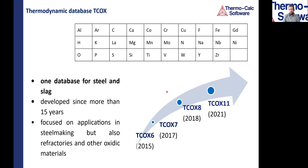The basis of everything is the database TCOX, which has been developed for over 15 years. The goal was to unify the description of steel and slag in one database, so you only need one database covering all the relevant steel and slag data. The database currently contains 29 elements covering all the relevant areas for steel making.